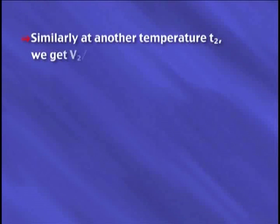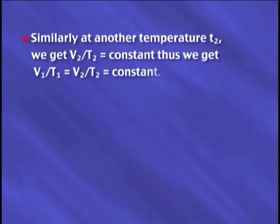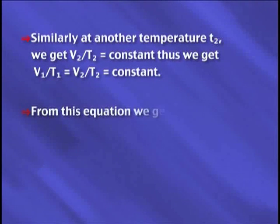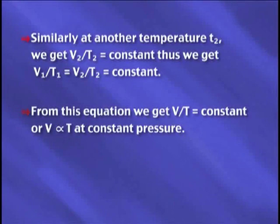Similarly, at another temperature T2, we get V2/T2 equals constant. Thus V1/T1 equals V2/T2, and V/T equals constant, meaning V is directly proportional to absolute temperature T at constant pressure. Charles' law can therefore be stated as: at constant pressure, the volume of a given mass of a gas is directly proportional to the absolute temperature.